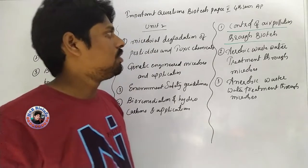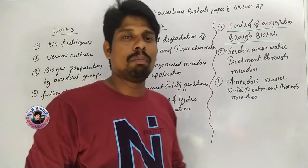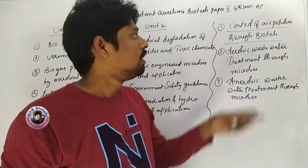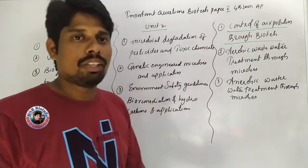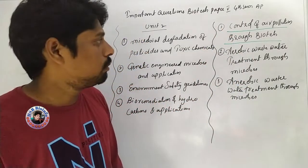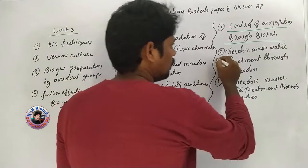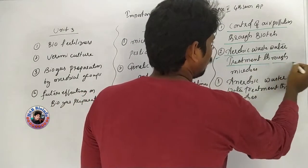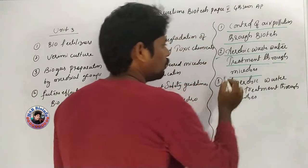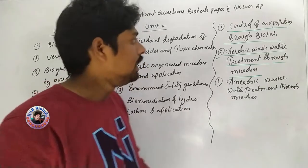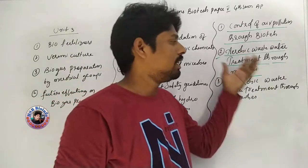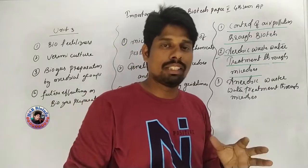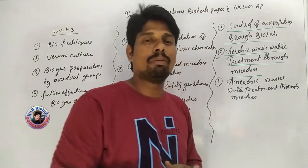Okay, biotechnology uses — see air pollution and other control, that's the first question. The second question is aerobic wastewater treatment: microbes are used in aerobic conditions, in the presence of oxygen, for wastewater treatment.